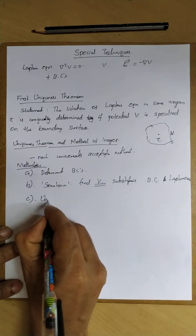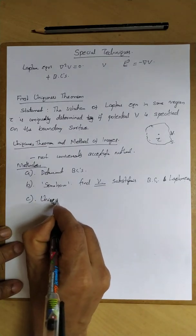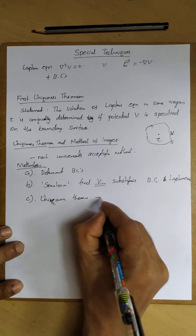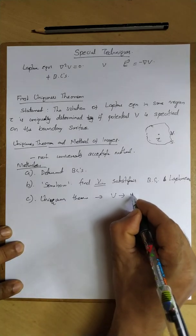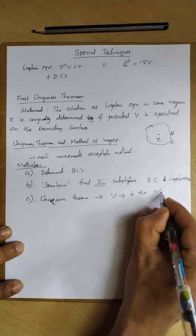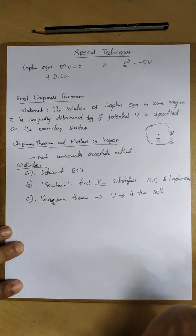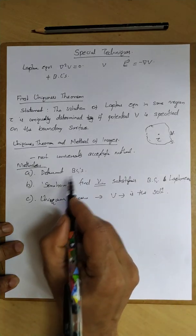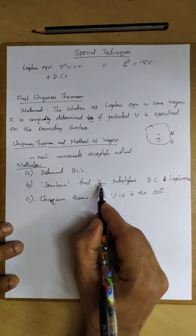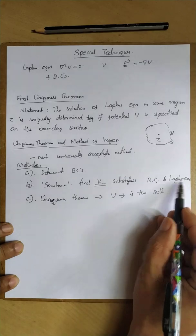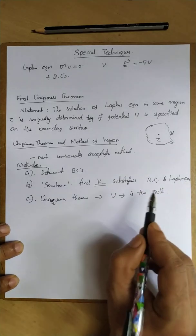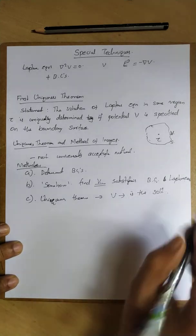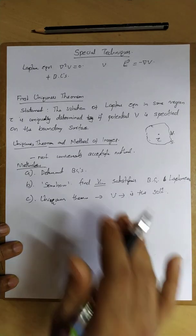That found potential becomes the actual potential. The uniqueness theorem then says V is the unique solution — that is the solution. So this is the strategy: identify the boundary conditions, find a matching potential, and by the uniqueness theorem that is the answer. That is the method of images.